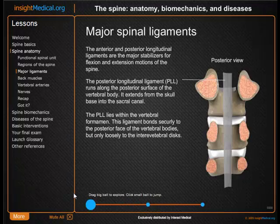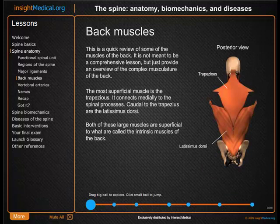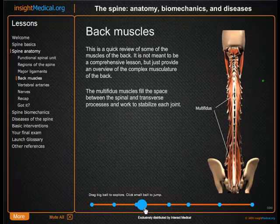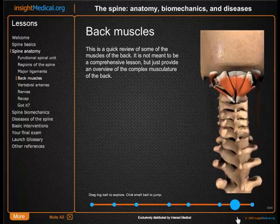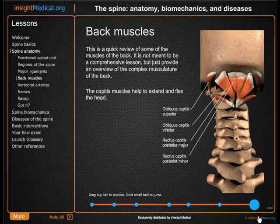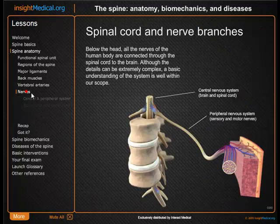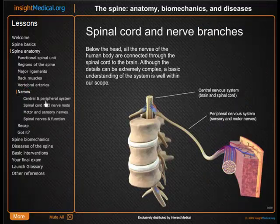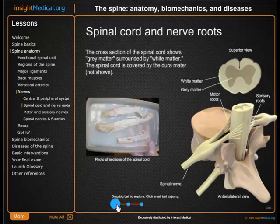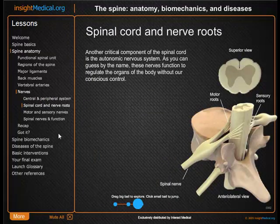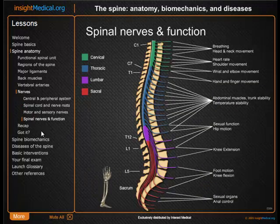Here we look at the two major ligaments of the spine. We discuss major muscles of the back, and we can zoom in, take away muscle layers, and identify individual muscles. We can look at the nerves and understand central and peripheral nervous system, the spinal cord, and its motor roots and sensory roots, spinal nerves and their function.